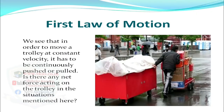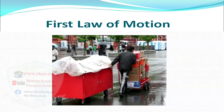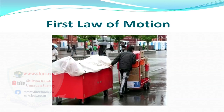Now let us discuss the first law of motion. We see that in order to move a trolley at constant velocity, it has to be continuously pushed or pulled. Is there any net force acting on the trolley here? It is necessary to apply force continuously to the trolley to keep it moving uniformly because a force is needed to balance out the force of friction. That is, the force of friction on the trolley can be overcome by continuously pushing or pulling it.